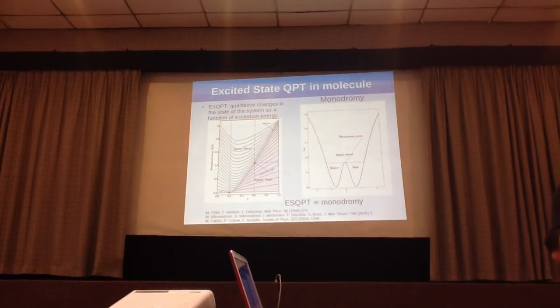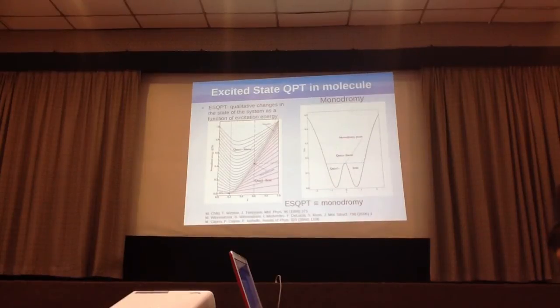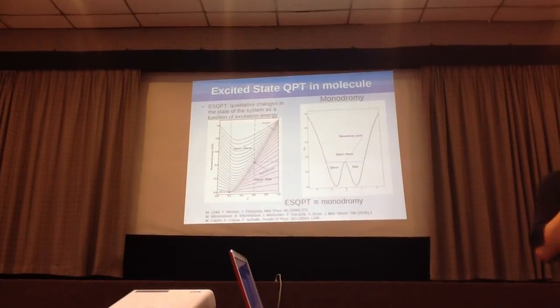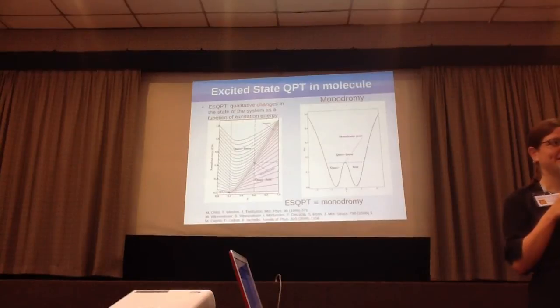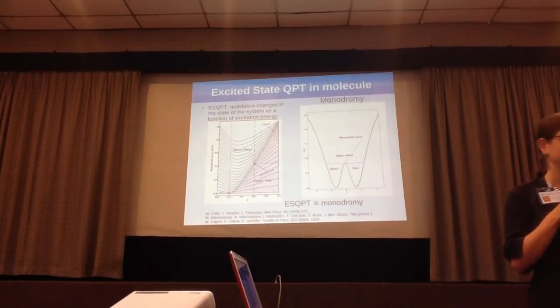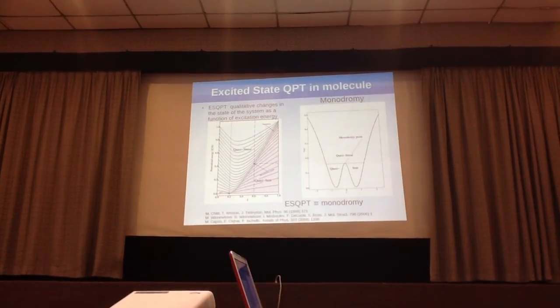If you talk to a molecular physicist, they'll call this isomerization. They'll talk about the isomerization plot and the isomerization points and everything. But to us, the isomerization is an excited state form of phase transition.